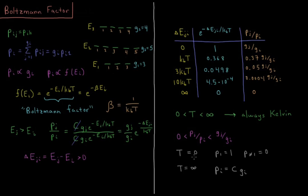At zero Kelvin, everything above the ground state is unpopulated — there's no probability of observing those states, because all separations are infinite times kT. At T equals infinity, everything is equally likely. And in between, there's this exponential dependence on the energy separation. So the Boltzmann factor tells us about the relative probability of observing each state, depending on their separation in energy and the temperature.